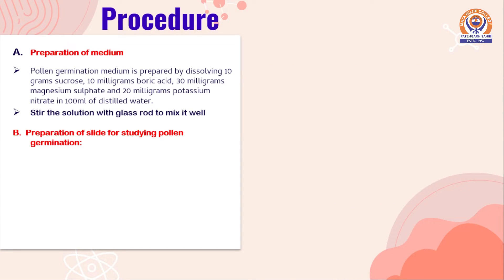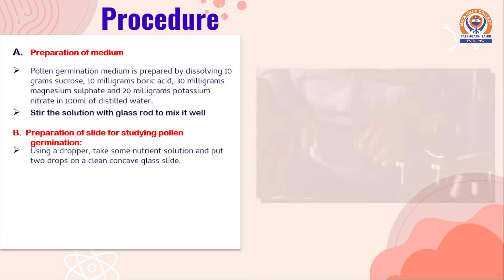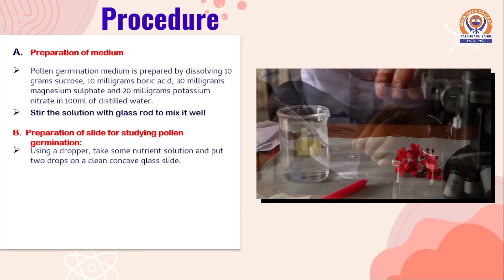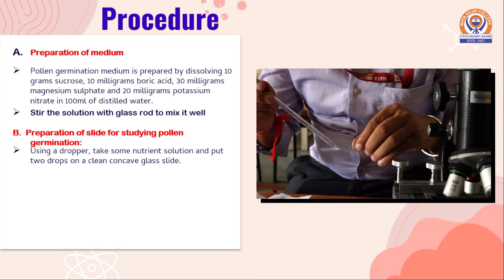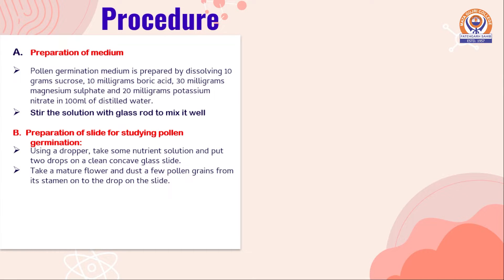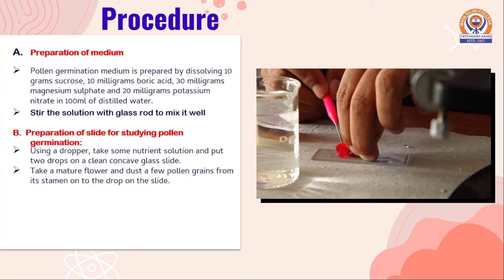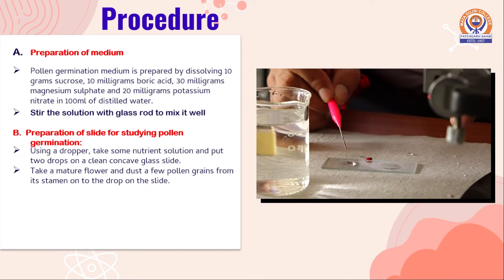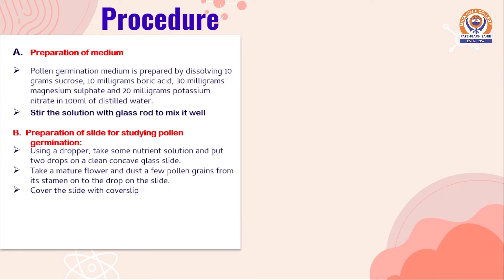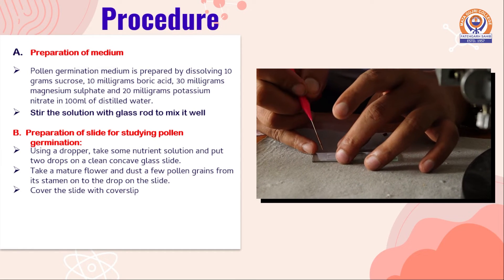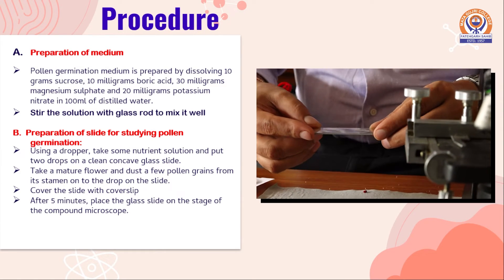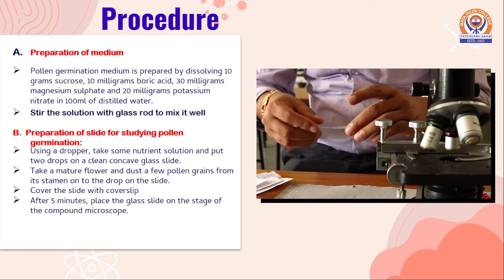The second part includes preparation of the slide for studying pollen germination. Using a dropper, take some nutrient solution and put two drops on a clean concave glass slide. Take a mature flower and dust a few pollen grains from it onto the drop on the slide. Cover the slide with a cover slip. After 5 minutes, place the glass slide on the stage of the compound microscope.